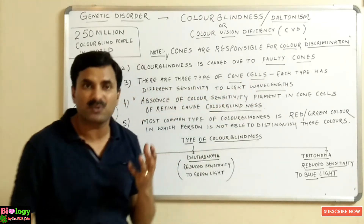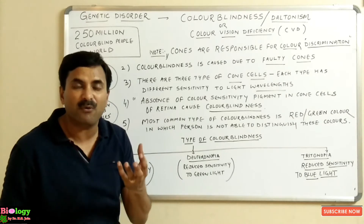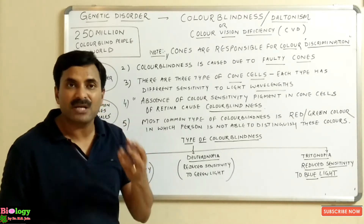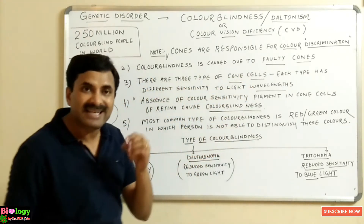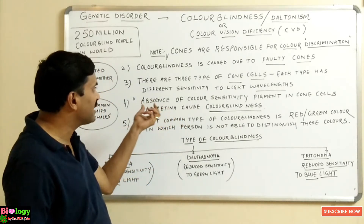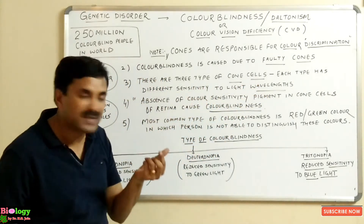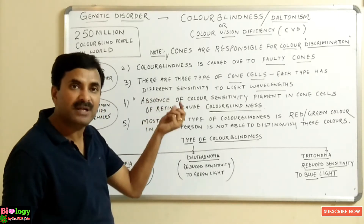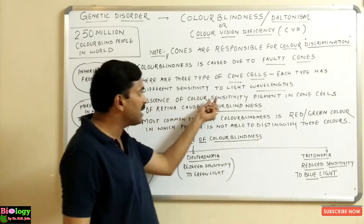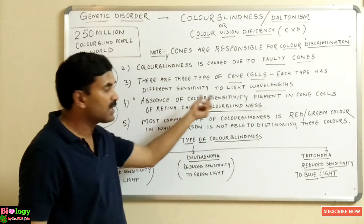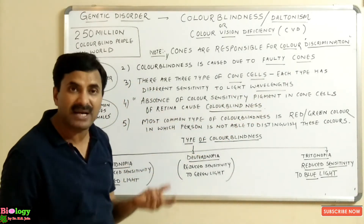To know more about colorblindness, you must know that there are three types of cone cells. These cone cells are meant for red color discrimination, green color, and blue color discrimination. Each type of cone cell has different sensitivity to different light wavelengths. The absence of color sensitivity pigments in the cone cells of the retina causes colorblindness.